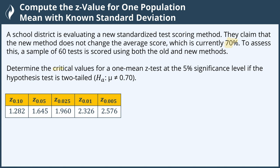Determine the critical values for a one-mean z-test at the five percent significance level if the hypothesis test is two-tailed, where the alternative hypothesis is μ does not equal 0.7.